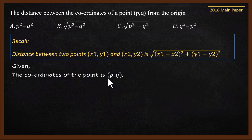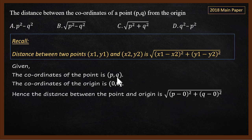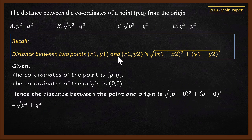The point is (p, q) and the second point is the origin (0, 0). Hence the distance is √[(p−0)² + (q−0)²] = √(p² + q²). If you remember this formula, you can easily select answer C.